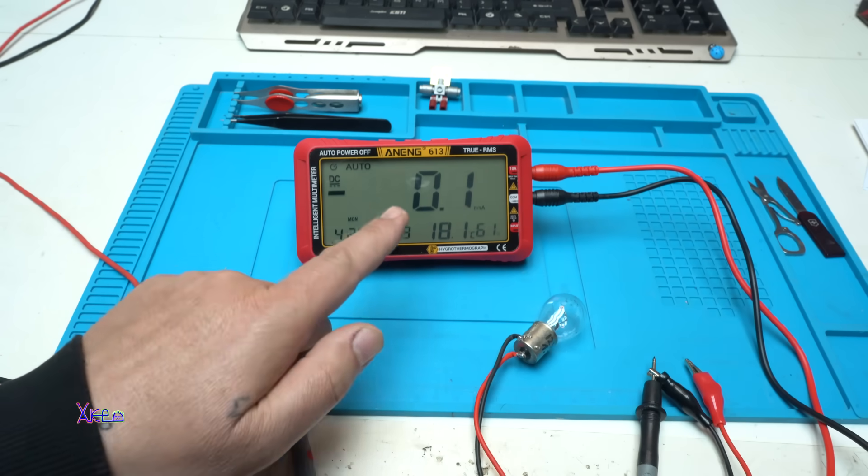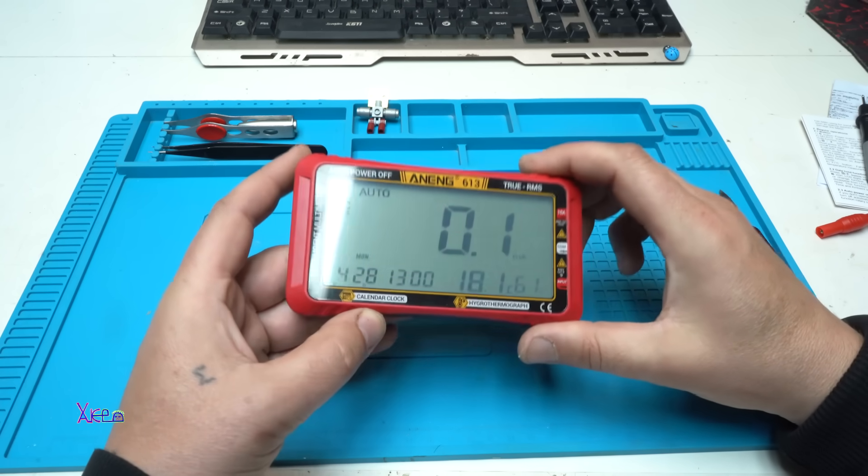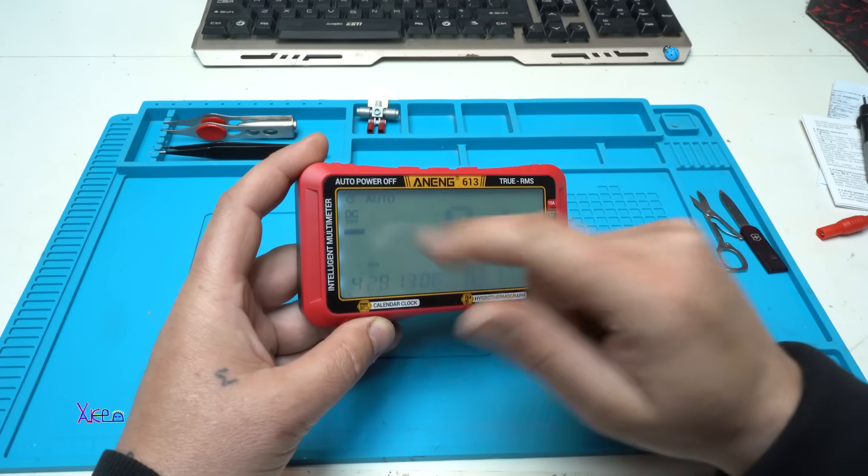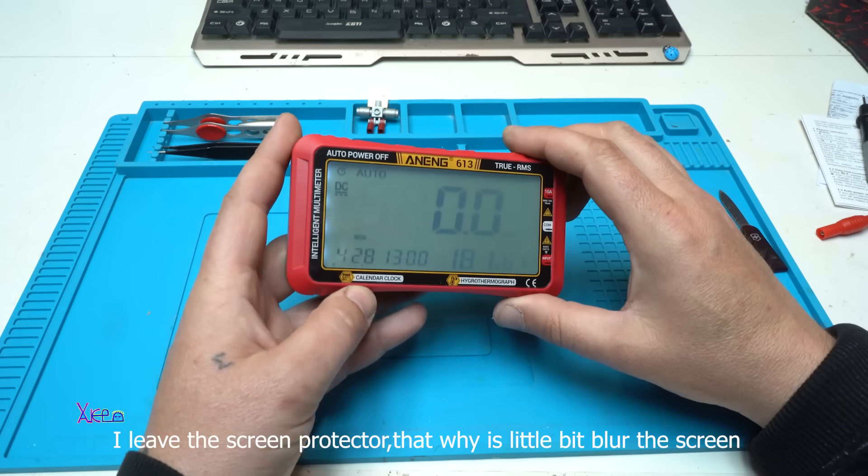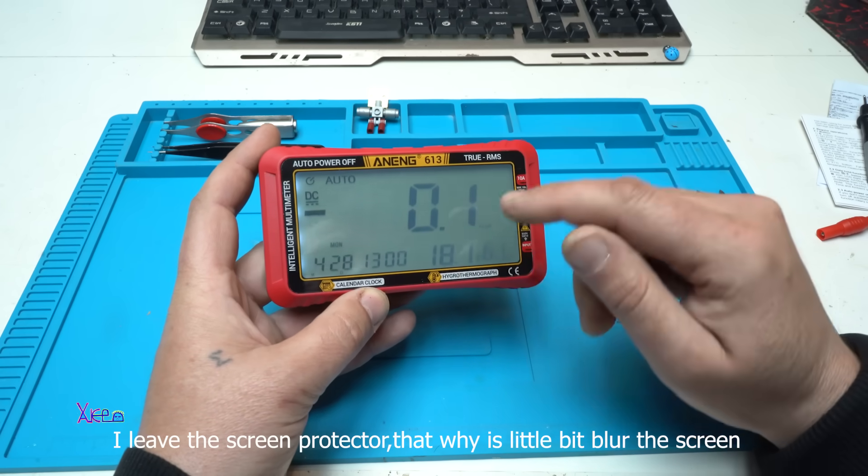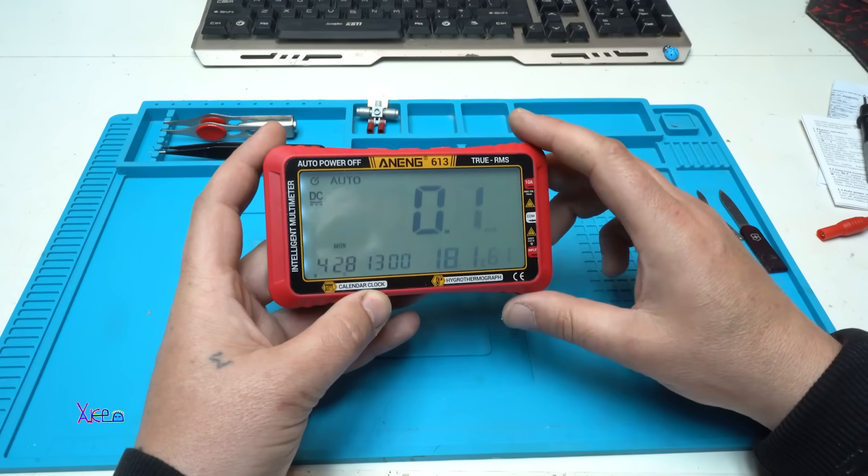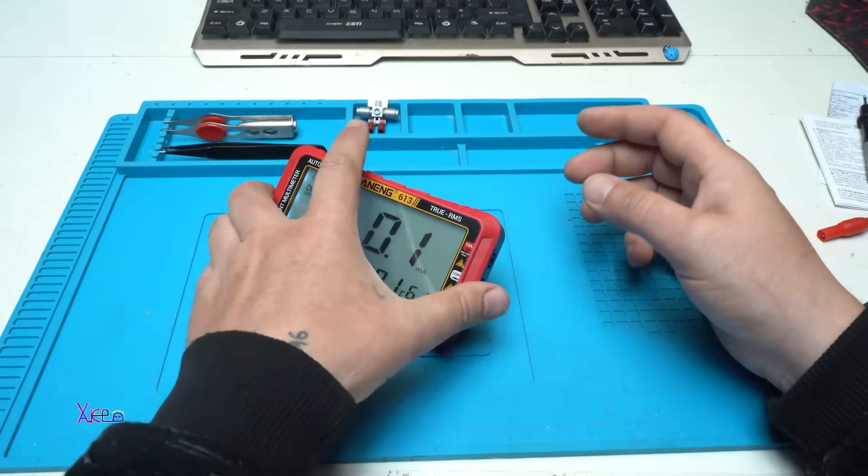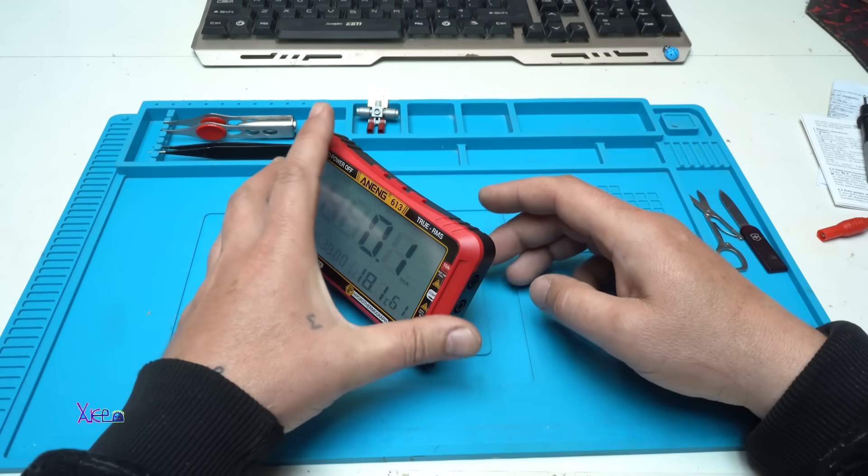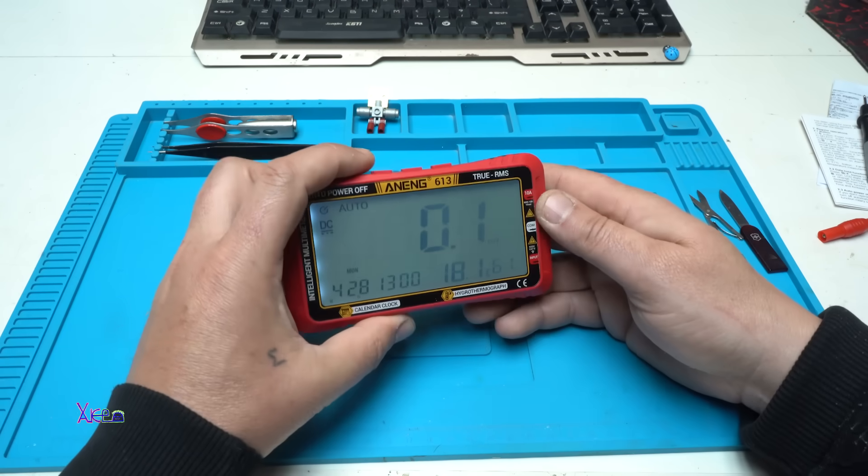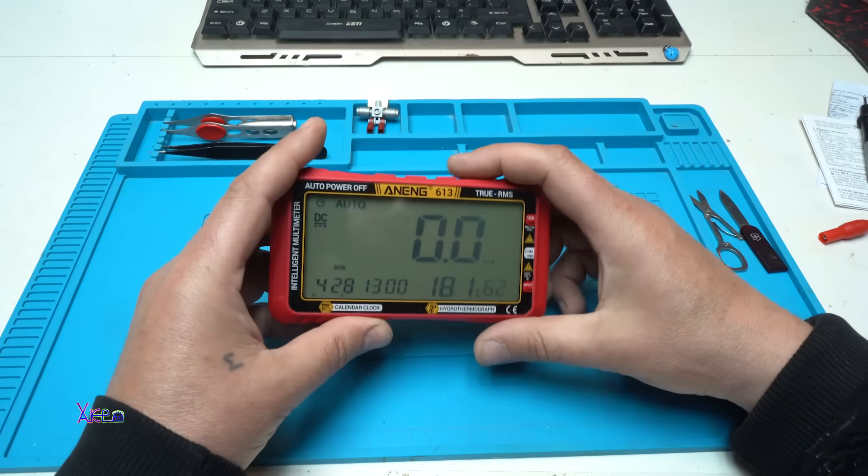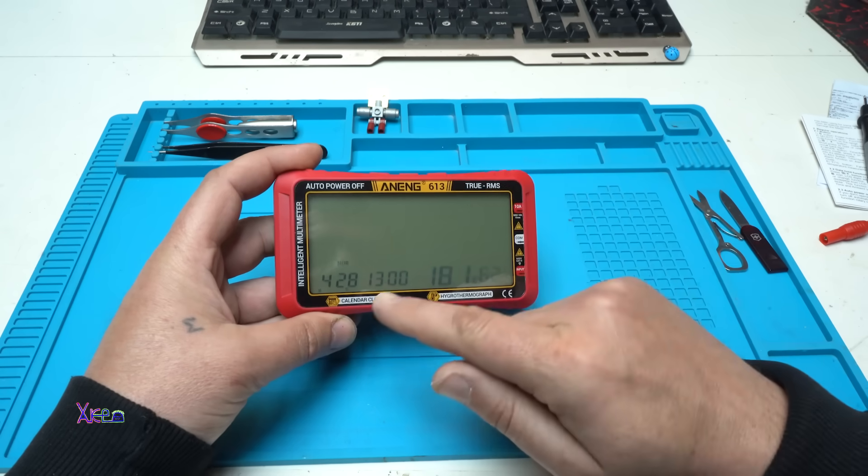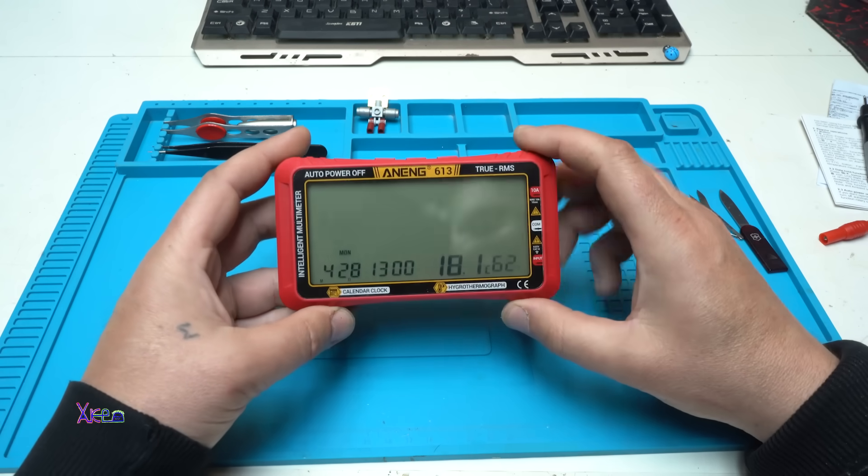Also measures milliamperes. And beside that it's a multimeter, the other functions are auto power off, calendar, temperature and humidity. The holder is nice, you can adjust that. Light, power off. When it's off, the clock and temperature, the humidity stay on the screen.